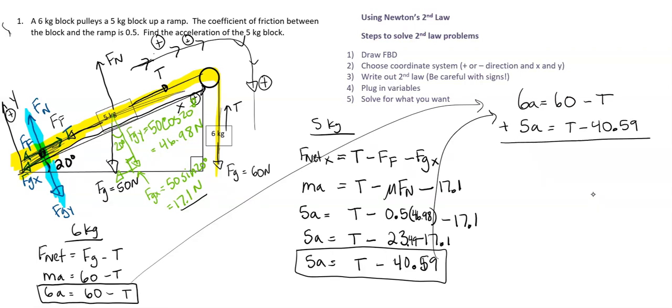Let's go ahead and add those together. So 6A and 5A is 11A. We have 60 minus 40.59, which is going to be what is that?